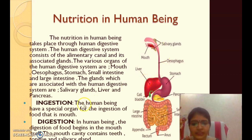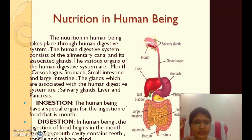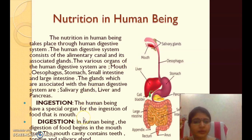Now let's start with ingestion. Human beings take food through the mouth, so the mouth is the organ for ingestion. Next is digestion. In the mouth cavity, there are teeth, tongue, and salivary glands.